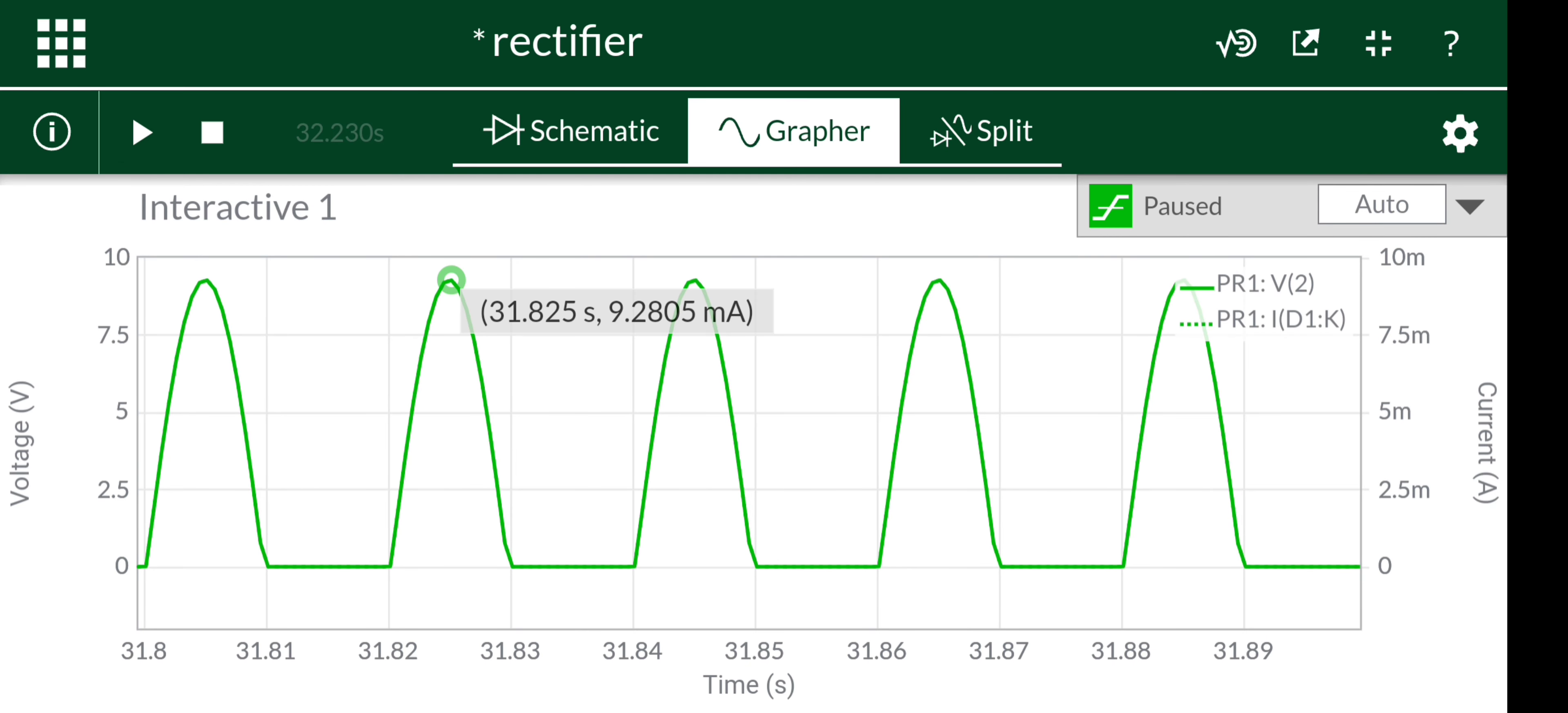This is the rectified output. Its peak is almost 9.3 volts. Because of the diode drop it is 9.2, and the negative half is clipped.